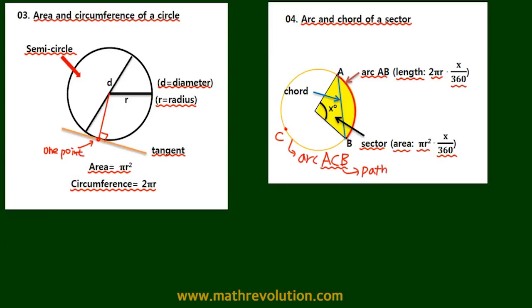So arc AB is the path on the right side and arc ACB is on the left side. And finally, this line between AB is called the chord of a circle. So make sure you remember these vocabularies.